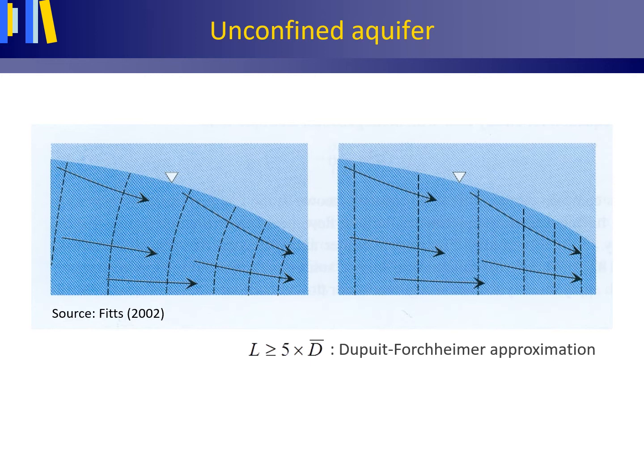For the Dupuis-Forchheimer approximation or assumptions to hold, as a rule of thumb, the length L of an isotropic aquifer must at least be five times larger than the average hydraulic head or average saturated aquifer thickness indicated as d with a bar over it. The Darcy equation would then read as follows: Q prime, in square meters per day, equals minus K times the average saturated aquifer thickness or depth, d bar, times the hydraulic gradient i or dH/dx.